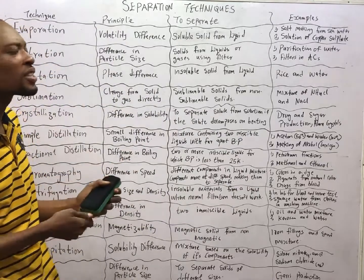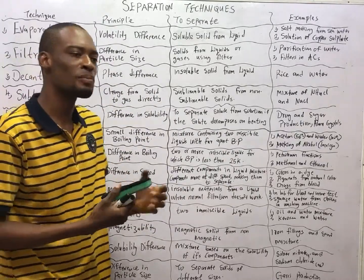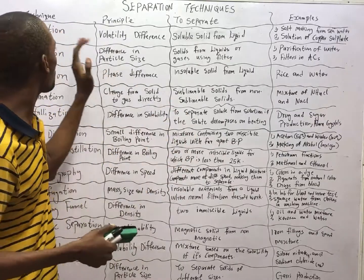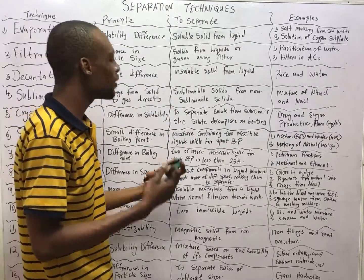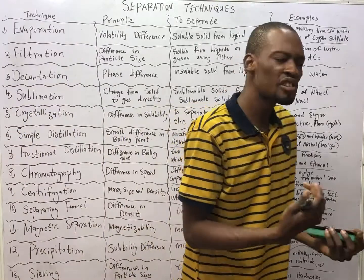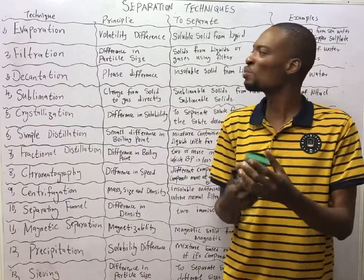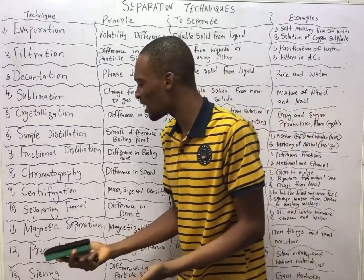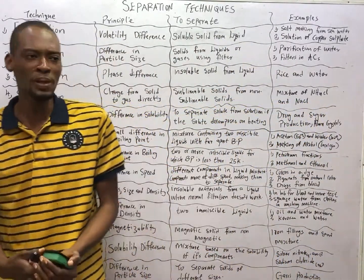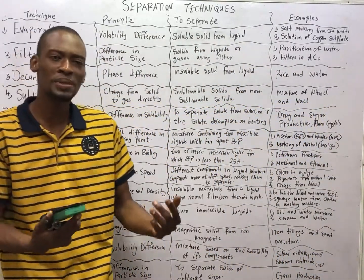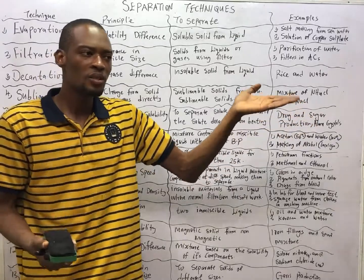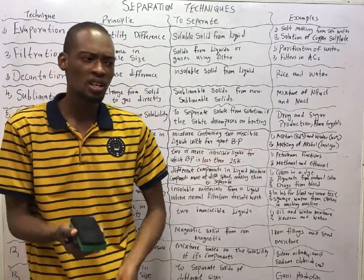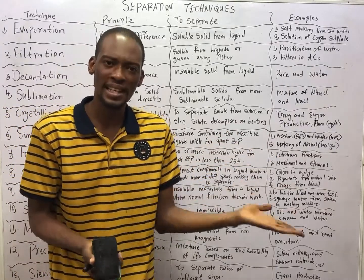Now, when is evaporation used as a separation technique, and what principle is it based on? Evaporation is based on difference in volatility between the constituents of the mixture. Volatility is the ability of a substance to escape. Look at petrol — it's volatile, it can escape. And water, when you heat water, it evaporates, so it is volatile.